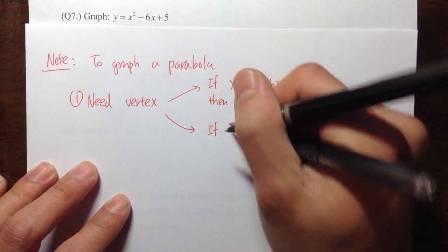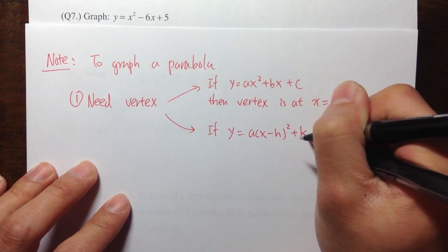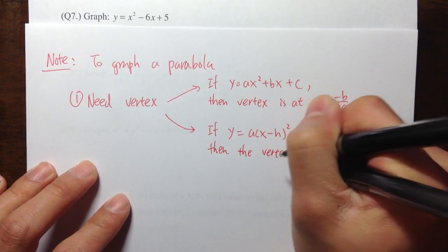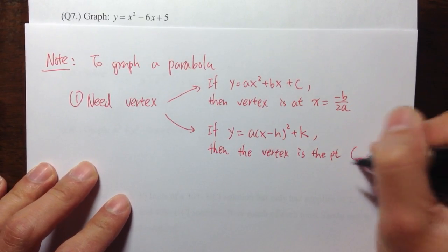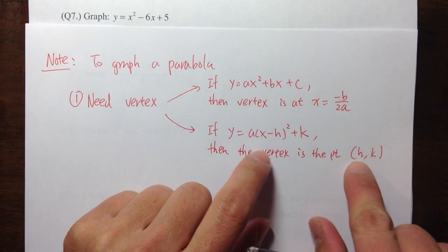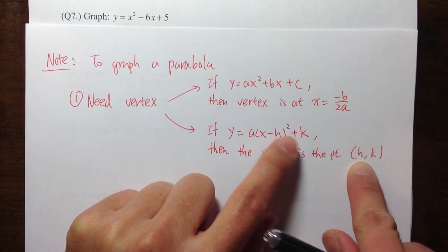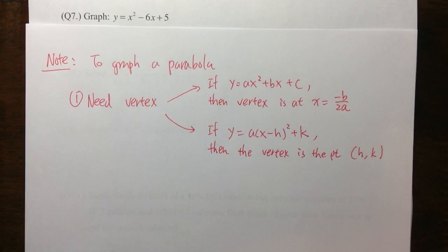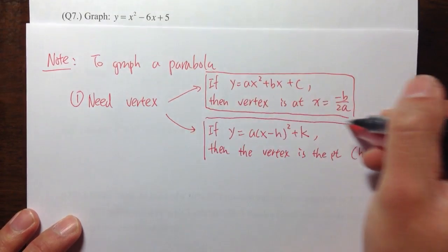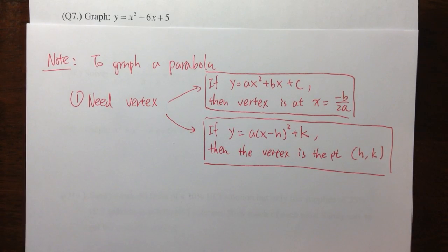Or, if we have another situation — if the given equation is in the form of a(x minus h) squared plus k — then the vertex is the point (h, k). Even though we are subtracting h, the vertex is actually positive h and k. These are the two situations: either use the vertex formula, or if the equation is in perfect square form, the vertex is just (h, k).